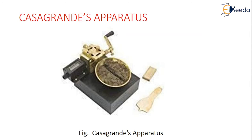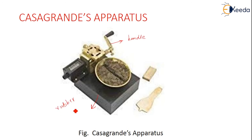Coming to Casagrande's apparatus — this is the apparatus seen in the laboratory. This is a handle, this is a rubber block, this is the instrument by which we make a groove in the soil sample, and this is the rise and fall mechanism.